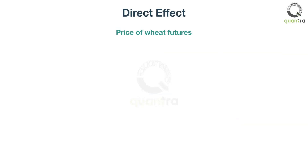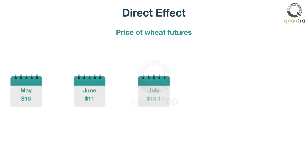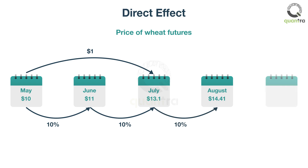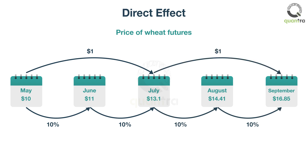Let's take an example. The wheat futures prices at the end of each month from May to July are shown on screen. From May to June it increased by 10%. Then from June to July it increased by 10% plus $1, which is 10% from June and $1 from May. Similarly, from July to August it increased by 10%. Then from August to September it increased by 10% plus $1, which is 10% from August and $1 from July.